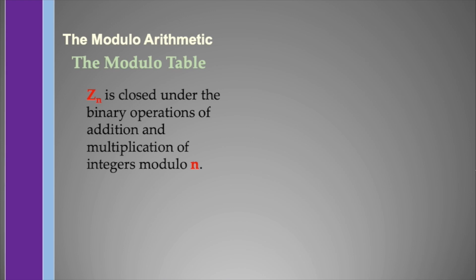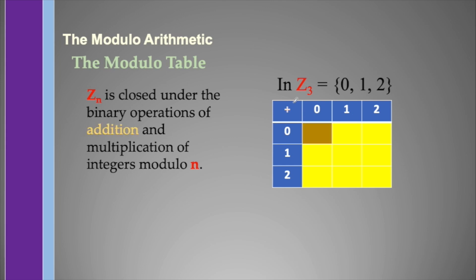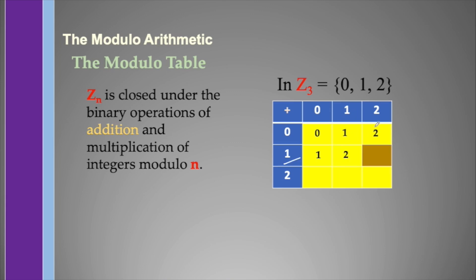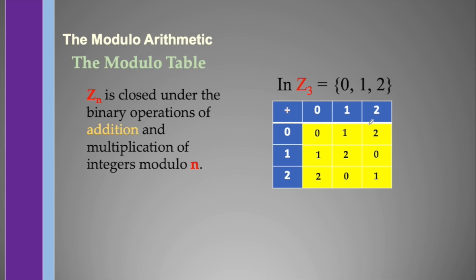Next, I am going to show the modulo table, which shows that Z sub n is closed under binary operations of addition and multiplication of integers modulo n. In Z sub 3, where values are only 0, 1, and 2, performing addition: 0+0=0, 0+1=1, 0+2=2, 1+0=1, 1+1=2, 1+2=3 which is 0 at modulo 3, 2+0=2, 2+1=3 which is 0 at modulo 3, and 2+2=4 which is 1 at modulo 3. Since all values in the table are composed of 0, 1, and 2, we can say it is closed under addition.